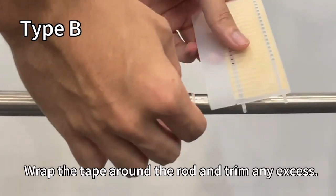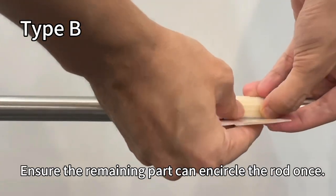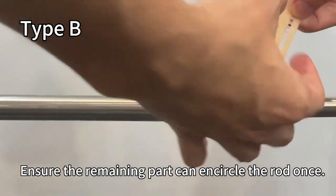Type B. Wrap the tape around the rod and trim any excess. Ensure the remaining part can encircle the rod once.